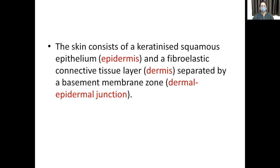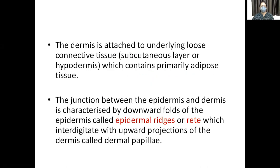The normal skin consists of epidermis, dermis, and the dermo-epidermal junction, which separates the epidermis and the dermis. The epidermis consists of keratinized stratified squamous epithelium. The dermis is composed of fibrous elastic connective tissue, attached beneath to adipose tissue. The dermo-epidermal junction can be in the form of epidermal ridges, or rete ridges, which interdigitate with the upward projections of the dermis called the dermal papillae.